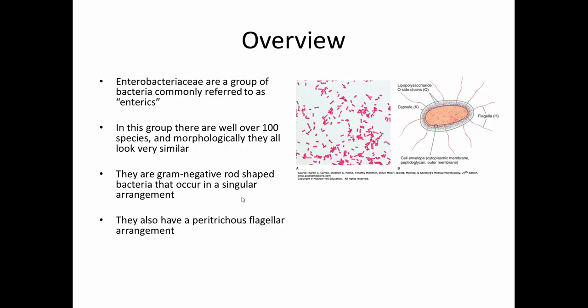If we do additional examination, we can see they have a peritrichous flagella arrangement, which we can determine by gram staining. So if we do a gram stain on an unknown bacterium, we can place it in the enterobacteriaceae group based on all these characteristics. Environmental information also helps — where did it come from? Was it isolated from a patient or from the environment? Once we have that, we can determine it's an enteric, but we still don't know which of the over a hundred species it is. Some are pathogens and some are harmless, so it is helpful to know which one you're looking at.